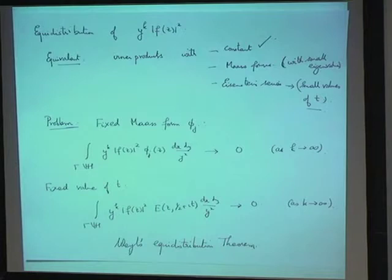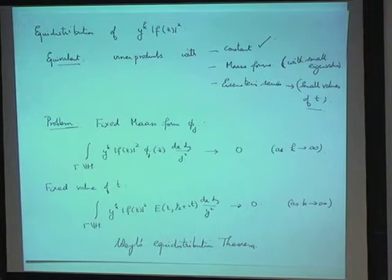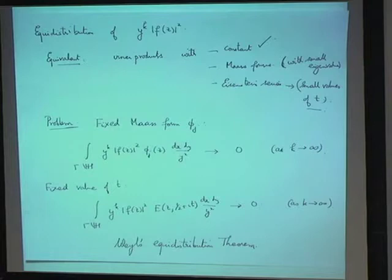What I've written down is the exact analog of Weyl's equidistribution criterion: you have a sequence of numbers, and to understand whether they are uniformly distributed, you decompose by taking a Fourier expansion, check that the constant term gives the main term, and show that every other exponential cancels out when evaluated along your sequence. That's Weyl's criterion, and what I've written down is the exact analog in this context.